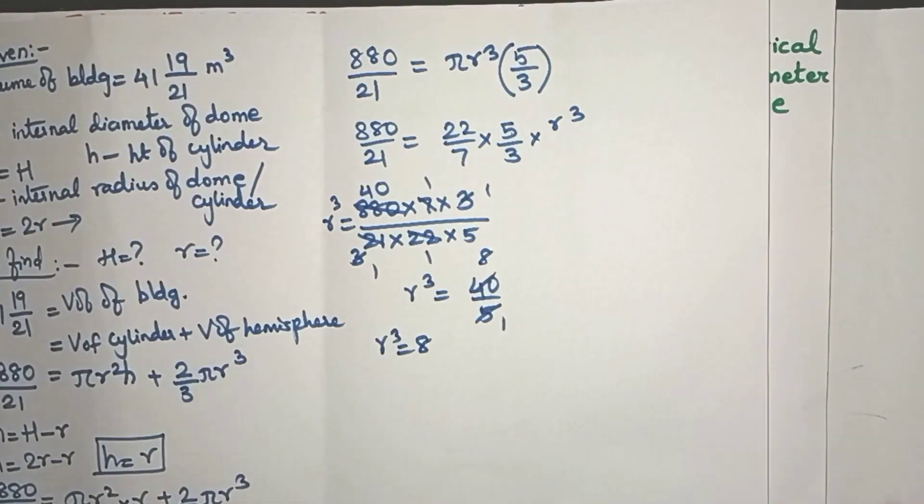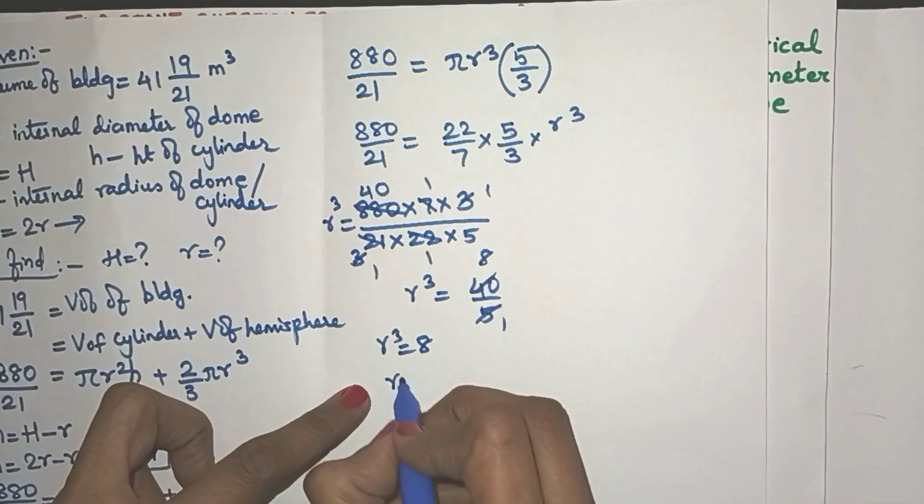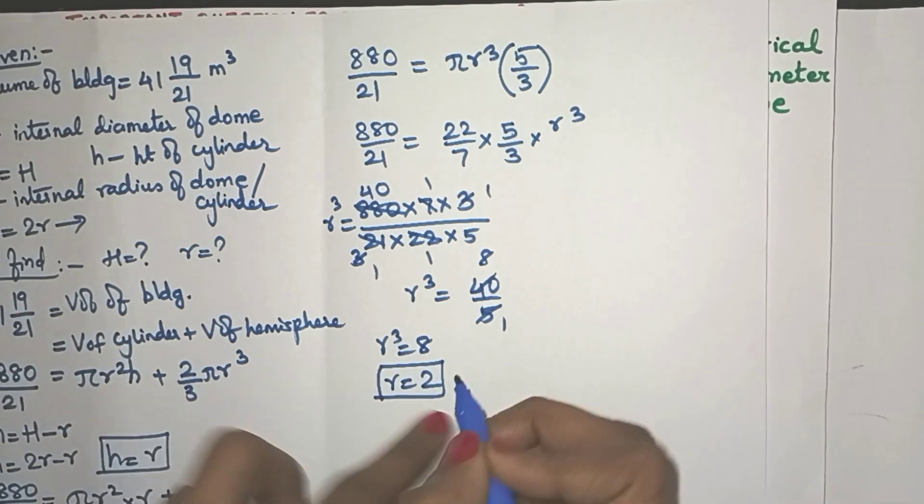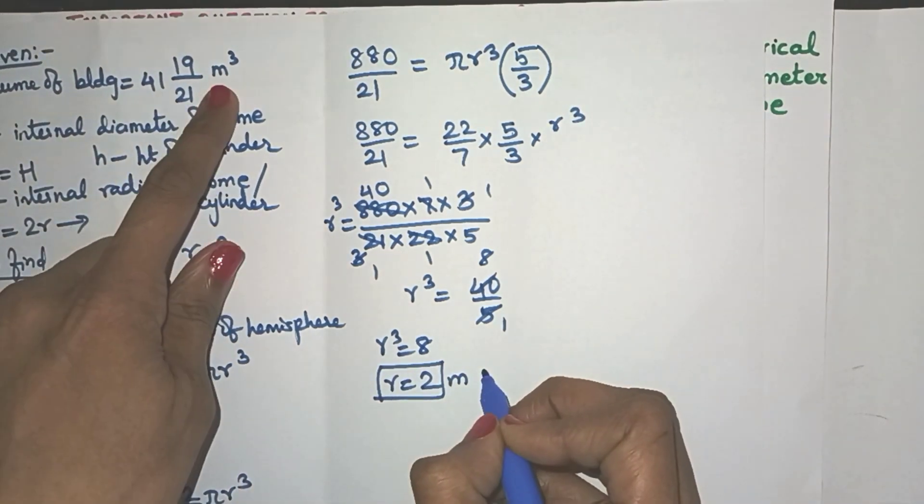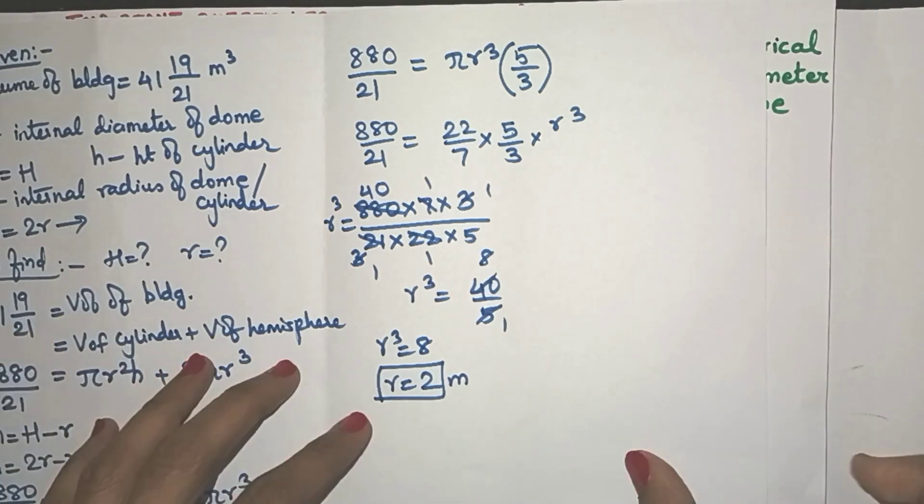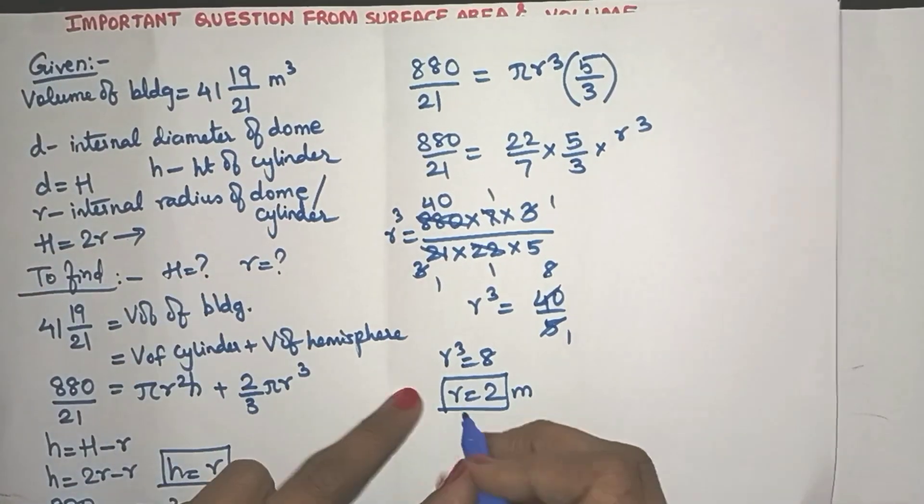Yes, 2. So radius will be nothing but 2 and the unit is meters. So radius is 2 meters. But what do we actually want? We want capital H.